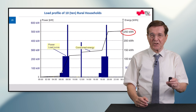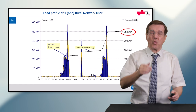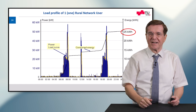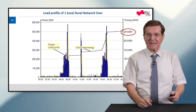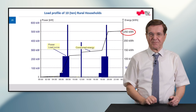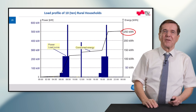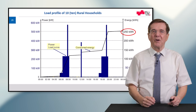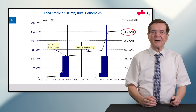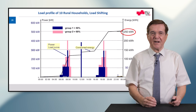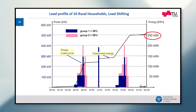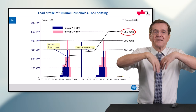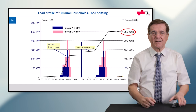Looking at the previous slide, one household has a peak of about 50 kilowatts corresponding to 25 kilowatt-hours, and if we have 10 households it's 10 times as much. If we have a problem with the cable cross-section and peak power, we can split the 10 households: group one is 50 percent and group two is 50 percent — each one has only half the peak load. By spreading these groups, the total peak load comes down.